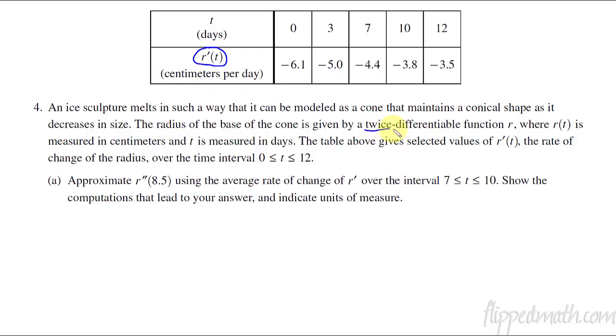That's important because if it's twice differentiable that means it is continuous. I'm just going to write that down because that might come back for some of our other problems. The first thing is to approximate the second derivative of r at 8.5 using the average rate of change over the interval 7 to 10. That makes sense, 8.5 is right in the middle between 7 and 10.